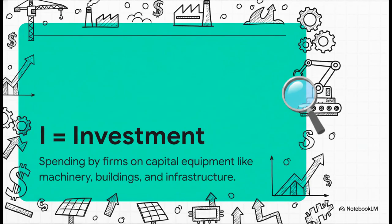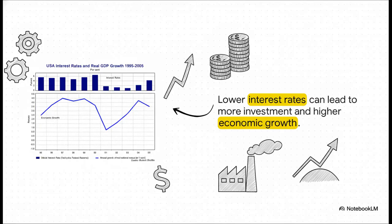Next up, we've got I for investment. Now, this isn't what you might think — like buying stocks. In economics, investment means spending by businesses on things that are going to help them produce more later on, like a factory buying a new robot or a software company building a huge new data center. Just take a look at this chart: the blue bars are interest rates. When they go down, it gets cheaper for businesses to borrow money for those big investments. Notice how the blue line — which is economic growth — often starts to climb when those interest rates fall. It's a really key lever in the economy.